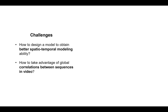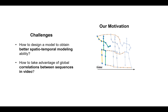Following this idea, we have two main challenges: how to design a model to obtain better spatio-temporal modeling ability, and how to take advantage of global correlations between sequences in video. The key observation for these challenges is that each joint has a different motion in a video sequence, so we can learn better spatio-temporal correlation from this viewpoint.